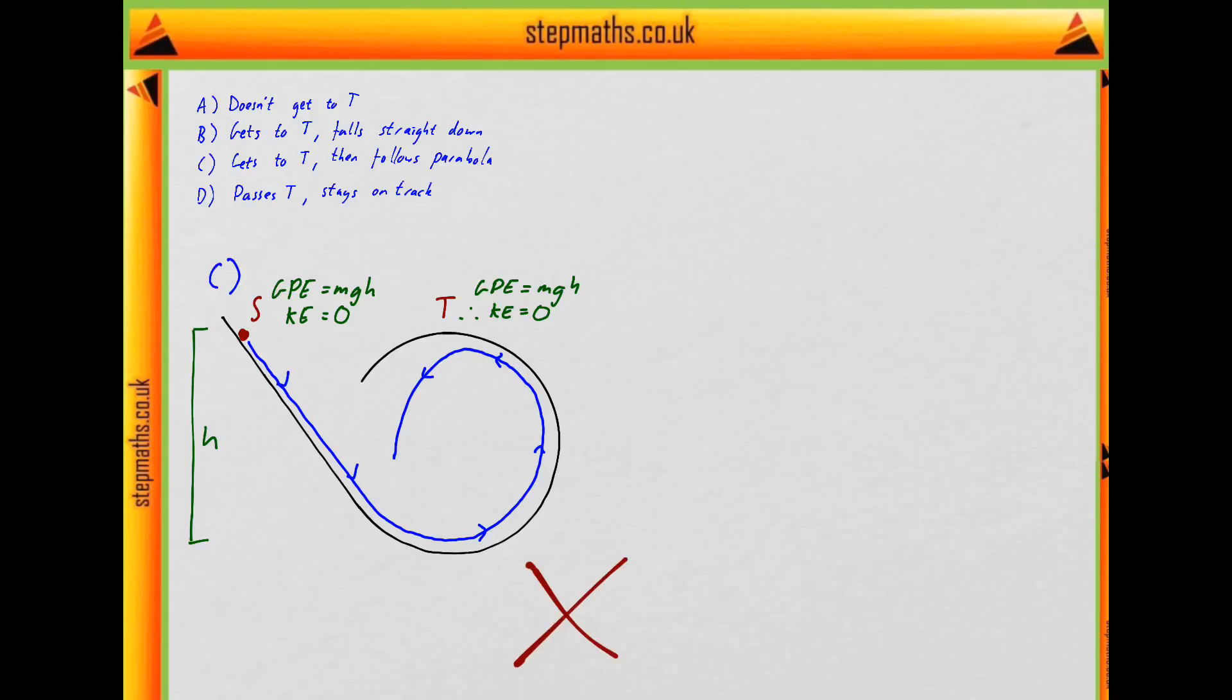And D is very similar. D looks like this. So it's exactly the same, except it stays on the track instead. But that still means it's moving through the point T with some positive speed. And therefore we can rule that out as well.